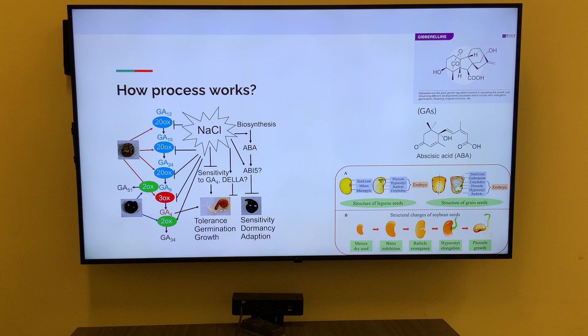As the stored nutrients are broken down, the embryo begins to undergo cellular expansion and differentiation. Gibberellins, a class of plant hormones, are synthesized and released by the embryo and act to promote cell division and elongation in the radicle and shoot. This allows the radicle to penetrate the soil and the shoot to emerge above ground.